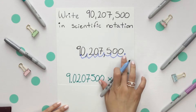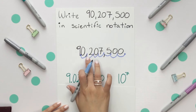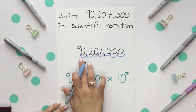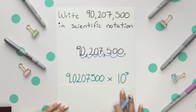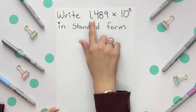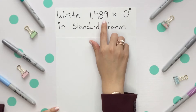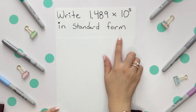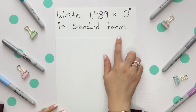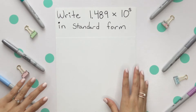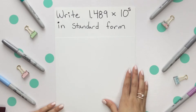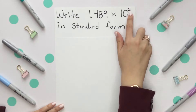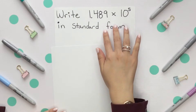Let's write 1.489 times 10 to the 5th in standard form. Remember, standard form is just the expanded form of this number. That 5 tells us it's a very large number.